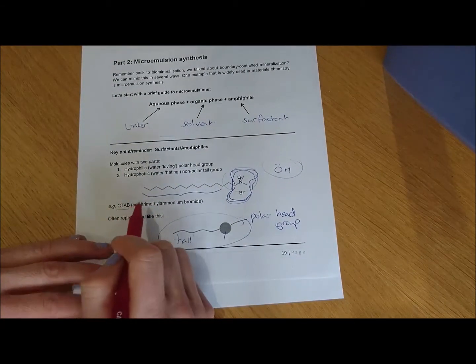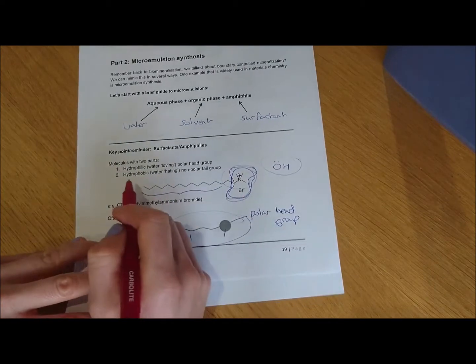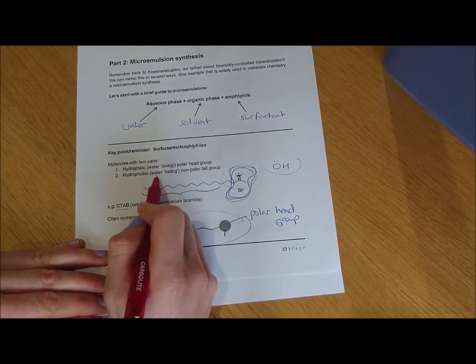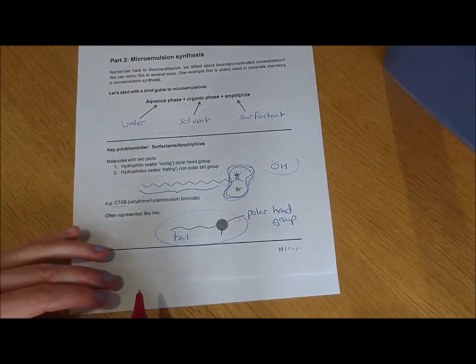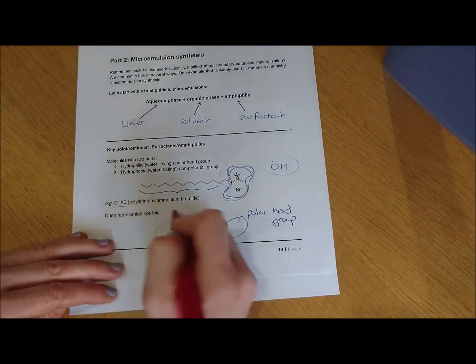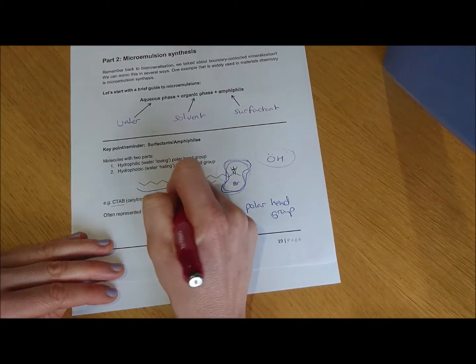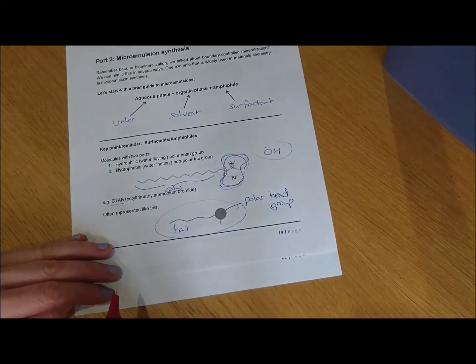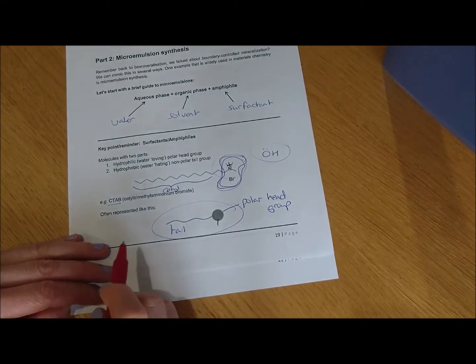And then the second part of your amphiphile, your molecule that has two parts, is your hydrophobic. So that's the water-hating non-polar tail group. This is normally just something like a long alcohol chain. And in the case of CTAB, this is the CTAB group, the long alcohol chain on the end of the CTAB molecule.